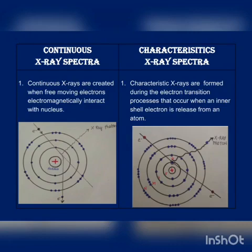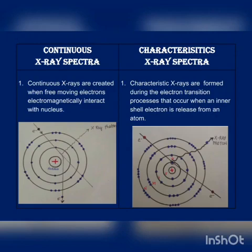Assume the electron collides with and knocks out an electron from the K shell. To fulfill this vacancy, an electron comes from any outer shell such as L, M, N, and so on. If the electron from the L shell fills the K shell vacancy — since L is nearest — and since the energy level of L shell is higher than K shell, the transition goes from high to low energy level. The emitted X-ray photon is called K-alpha X-ray. If the vacancy is filled from the M shell, it is called K-beta X-ray, and from the N shell, K-gamma X-ray.